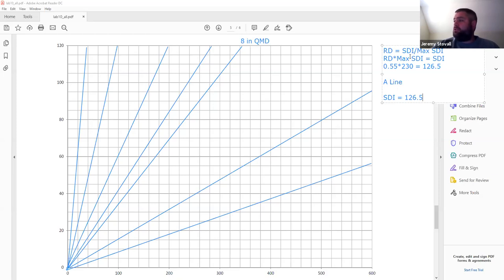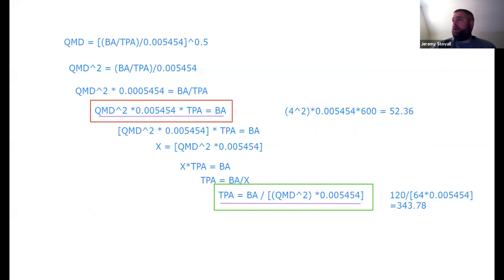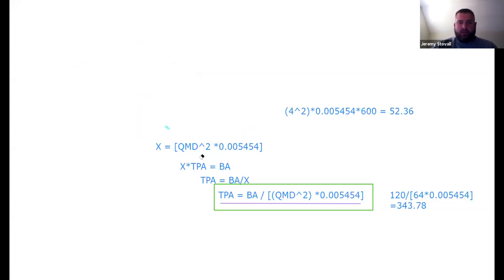SDI = 126.5 for the A line. Now, the SDI equation is: SDI = TPA × (QMD/10)^1.605. I'll use the same substitution trick — define X as (QMD/10)^1.605 — making the equation SDI = TPA × X.